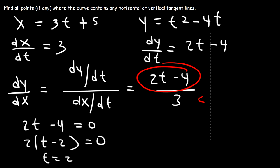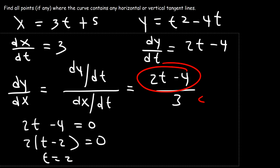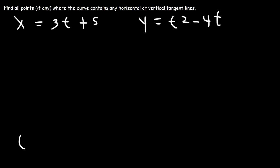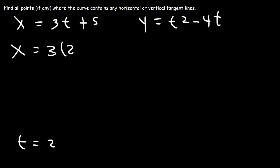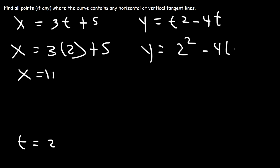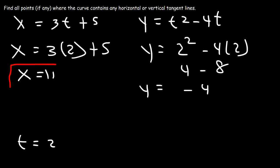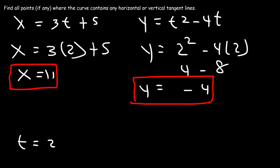Now we need to find the point — that means we need to find the x and y values where the horizontal tangent line exists. Now that we have t, all we have to do is plug it into the original equations. 3 times 2 is 6, plus 5, that's 11. 2 squared is 4, 4 times 2 is 8, 4 minus 8 is negative 4. So x is 11 and y is negative 4. We have a horizontal tangent line at the point (11, −4).